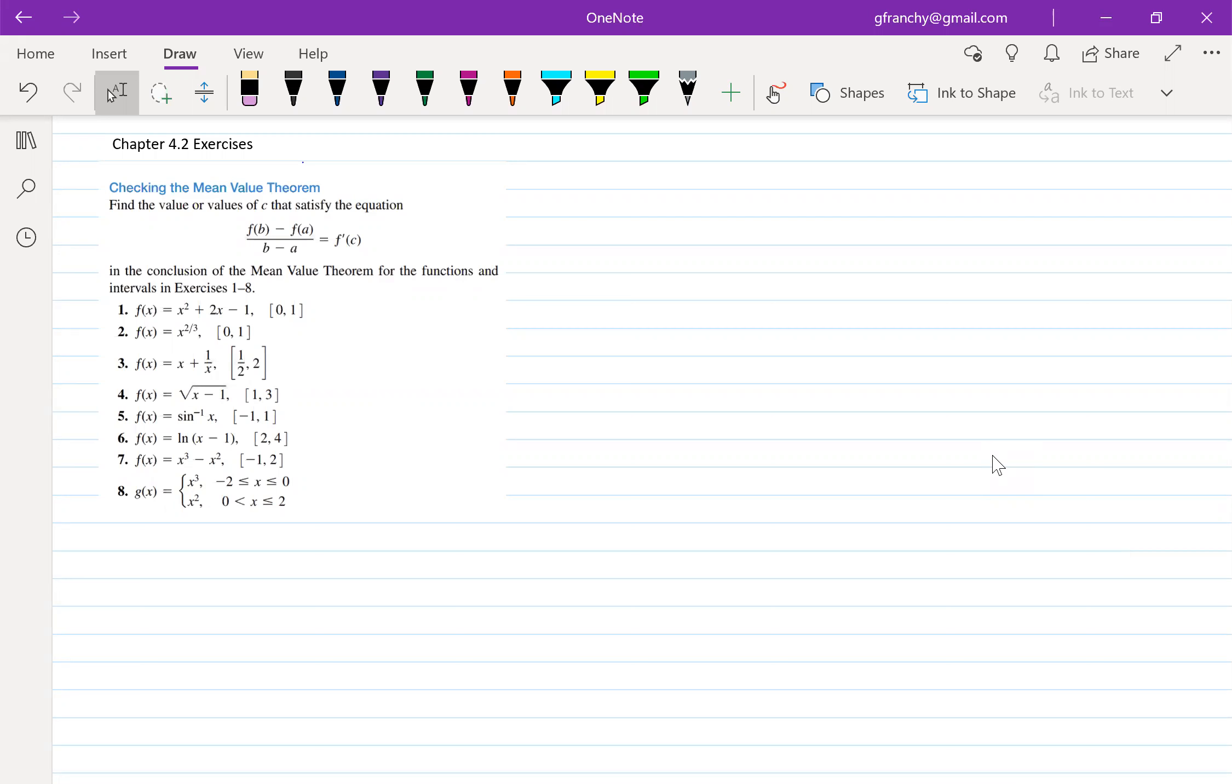So let's copy our function here for number six. So f of x is equal to natural log of x minus one, and we're on the interval from two to four, closed interval from two to four.